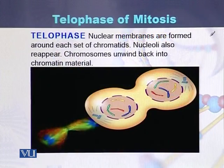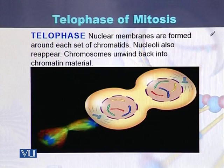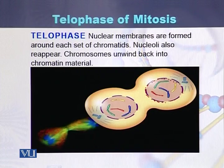If we look at this diagram, the cell has been stretched and one cell is going to convert into two daughter cells. Nuclear membranes have started to appear around the chromosomes in one daughter cell as well as in the second daughter cell.